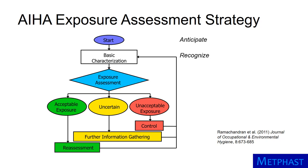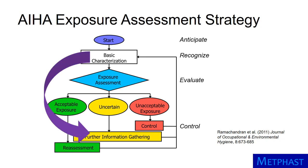Next is exposure assessment. This involves defining similar exposure groups, establishing exposure profiles, and making judgments about the acceptability of exposures — this is the evaluate portion of the occupational hygiene framework. Further actions vary depending on the specialist's judgment of an exposure's acceptability. If an exposure's acceptability is uncertain, additional information must be gathered. If an exposure is unacceptable, it needs to be controlled to reduce the exposure — this is the control part of the framework. If an exposure is acceptable, it is reassessed regularly, making exposure assessment a cyclical endeavor.